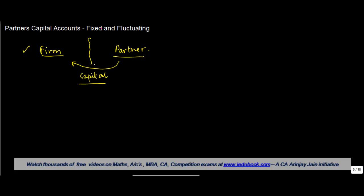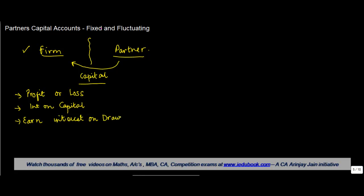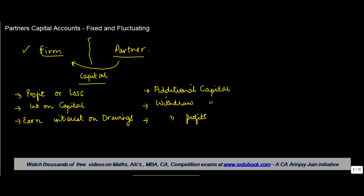The first transaction being the firm may earn some profit or loss. The firm may pay interest on capital, and it may earn interest on drawings. Then there could be additional capital which may be put in by the partner — if the business requires more money, he puts in more funds. Or it may be that he withdraws capital, and he may also withdraw profits or interest income.